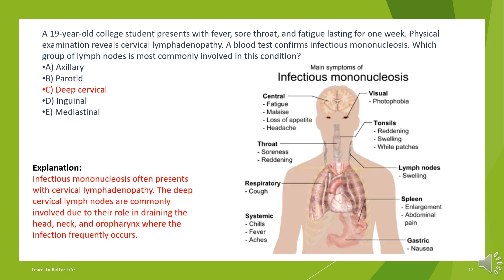The answer is C. Deep cervical. Infectious mononucleosis often presents with cervical lymphadenopathy. The deep cervical lymph nodes are commonly involved due to their role in draining the head, neck, and oropharynx where the infection frequently occurs.